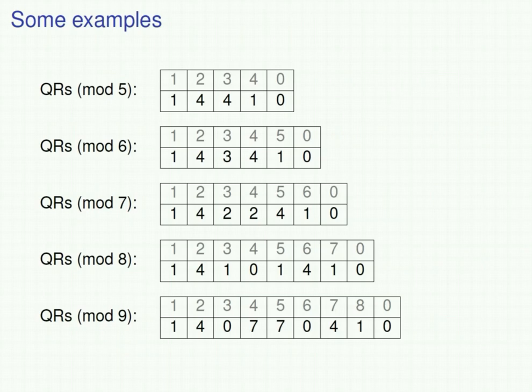Here I've written out some examples. I've listed the squares mod k for each k between 5 and 9. Note that if you look at the first k minus 1 of them for a given k, they read the same backwards as forwards.